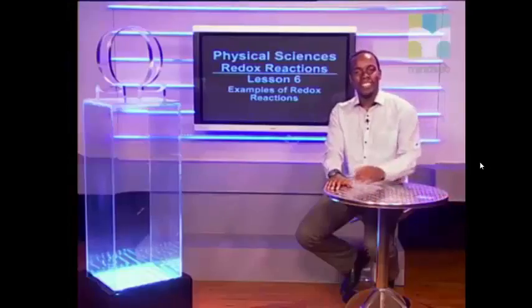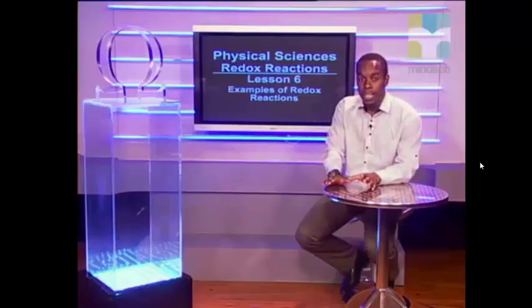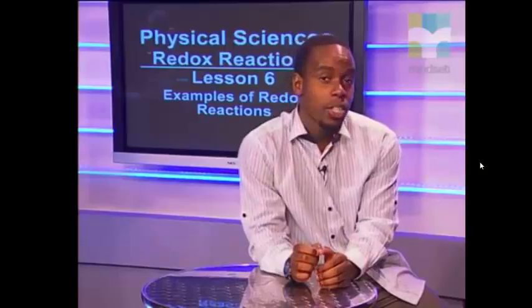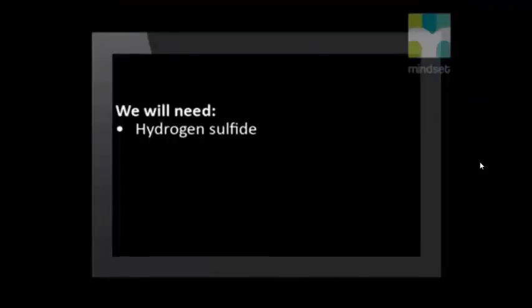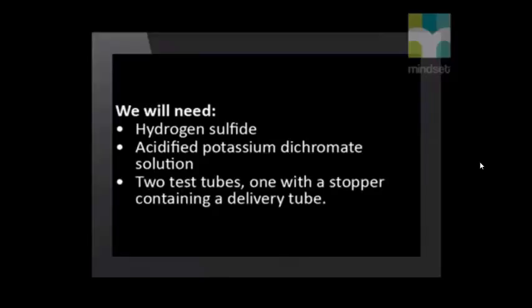Good day grade 11s. In this lesson we will investigate different redox reactions. In this experiment we will investigate the reaction between hydrogen sulfide and potassium dichromate. We will need hydrogen sulfide, acidified potassium dichromate solution, two test tubes, one with a stopper containing a delivery tube.